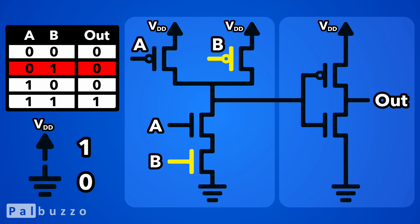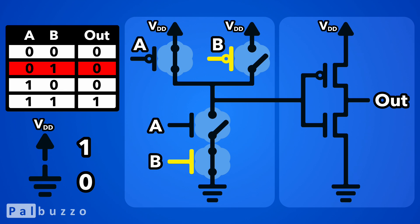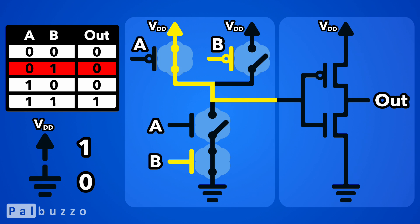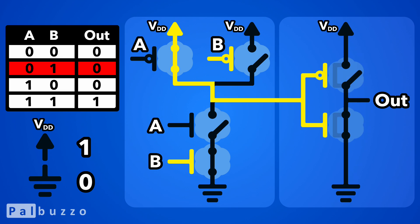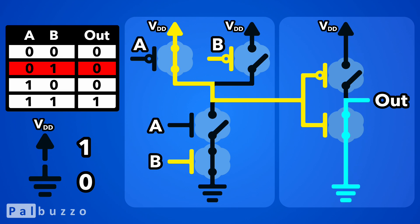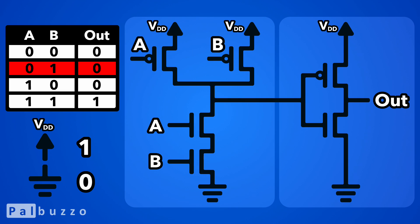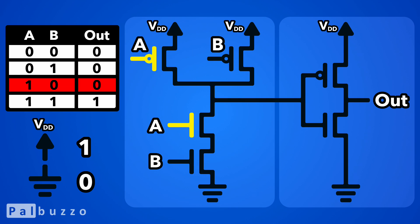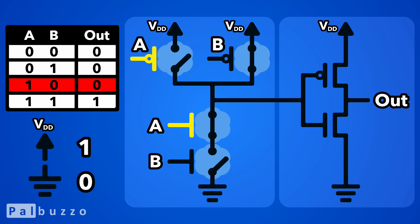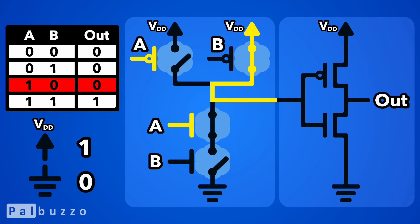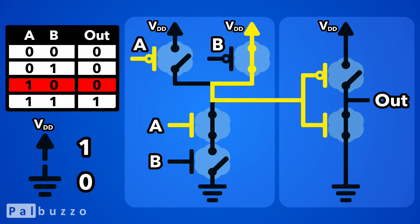When input A is 0 but input B is 1, we still have one PMOS transistor in the first stage connecting the intermediate output to VDD, which will again cause the NMOS transistor in the second stage to connect the final output to ground, producing a result of 0. And when input A is 1 but input B is 0, the other PMOS transistor in the first stage will connect the intermediate output to VDD, which will yet again cause the NMOS transistor in the second stage to connect the final output to ground, again producing a result of 0.